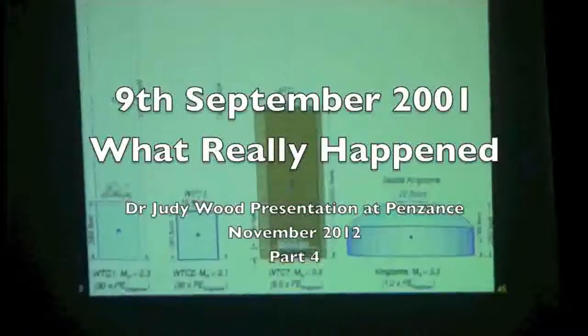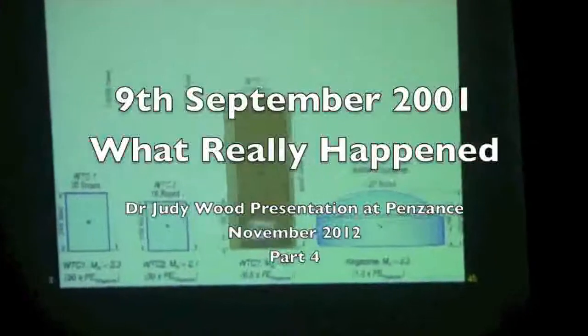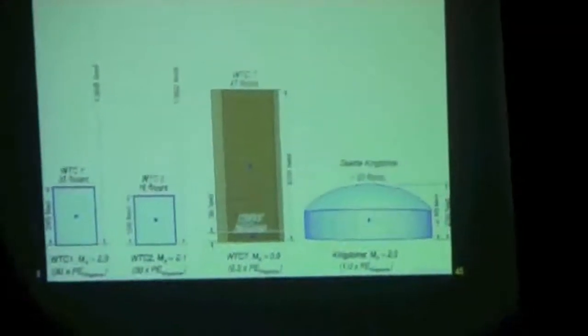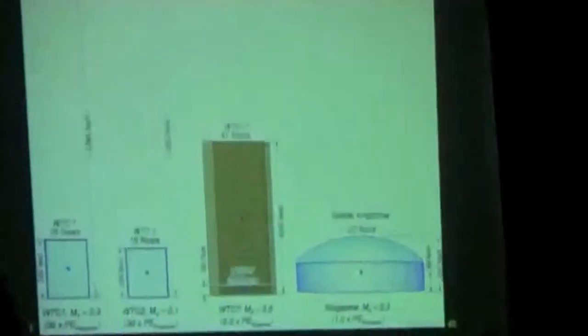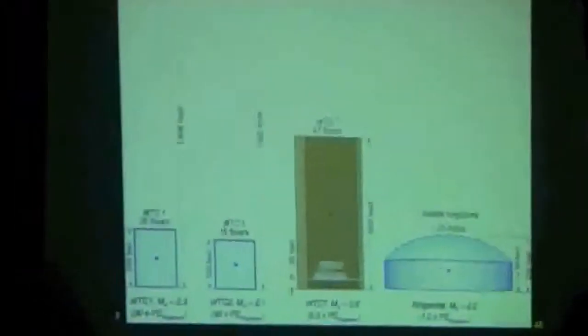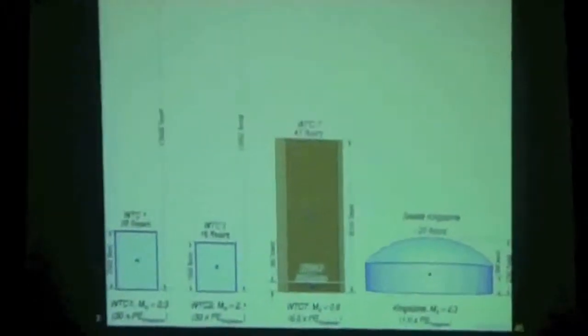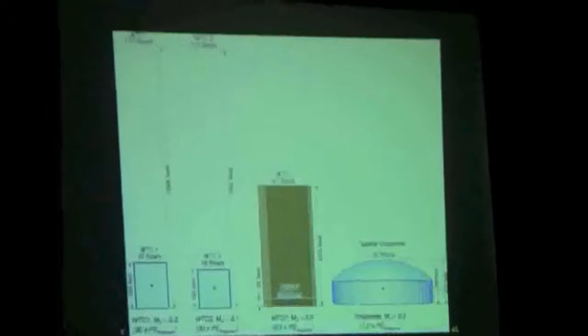For Building 1, if you turned all of it but the bottom 20 stories to dust, you would get the seismic signal that was recorded. So all of this stuff and that height is unaccounted for. Tower 1 had the same magnitude as the Kingdome, but it's 30 times — that's 3 times 10 — 30 times more potential energy, height and mass. So it should at least be more than that.